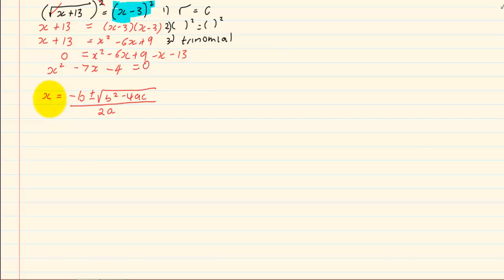We substitute. Your a is 1, your b is minus 7 and your c is minus 4. So we have x is equal to minus minus 7 plus minus square root of b squared minus 4ac. Knowing that our a, b and c are the numbers that are in our trinomial. A is 1, b is minus 7, c is minus 4. All over 2 into 1.